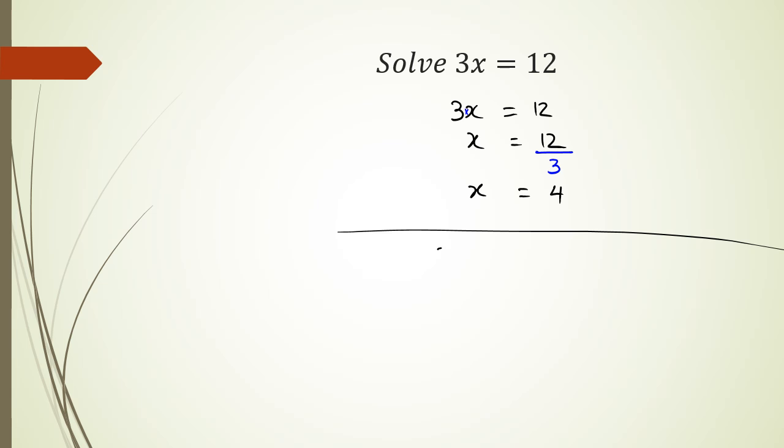One way of doing it. Another way would be 3x equals 12, divide both sides by 3, and the 3s cancel out, which means x equals 4. Once again, two different methods, same answer.